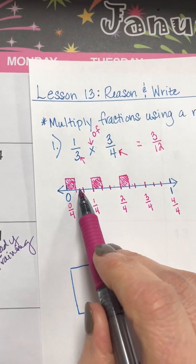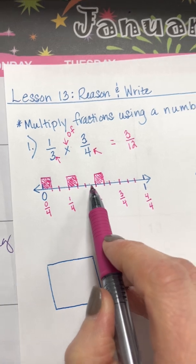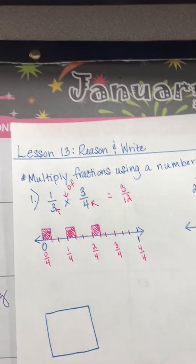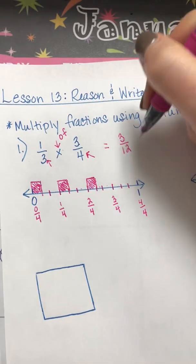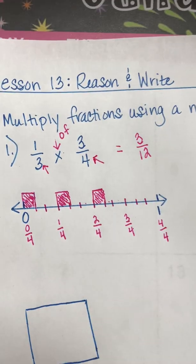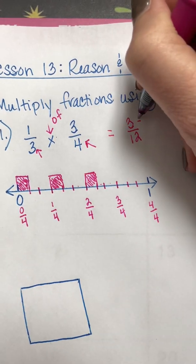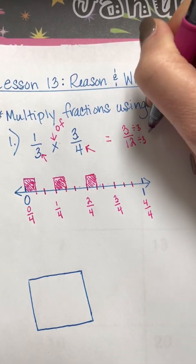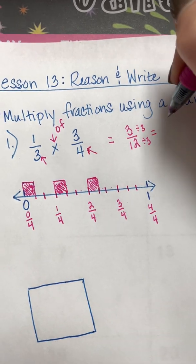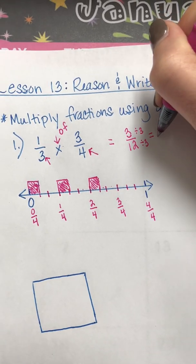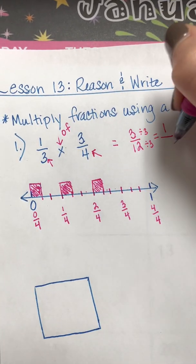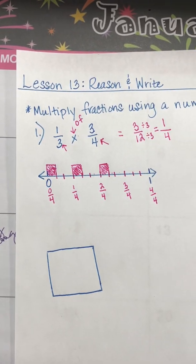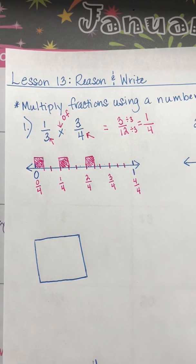Your denominator is the total number of pieces all the way up to one whole. We just counted twelve: one, two, three, four, five, six, seven, eight, nine, ten, eleven, twelve. So we have three-twelfths. Now, three and twelve can both be divided by three, giving us one on top and four on the bottom — so one-fourth. One-fourth of this entire line is actually shaded.